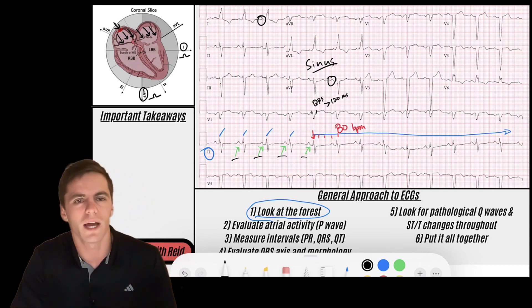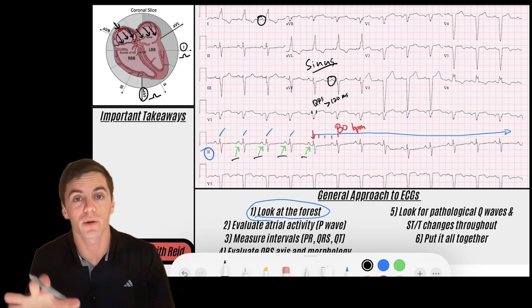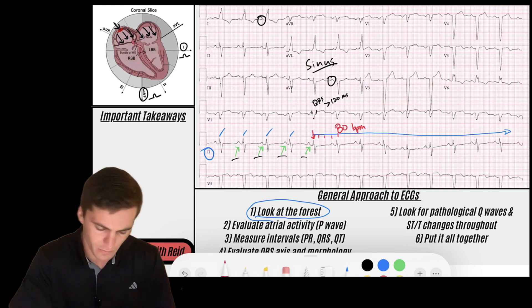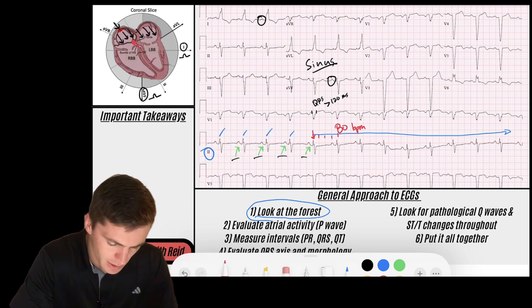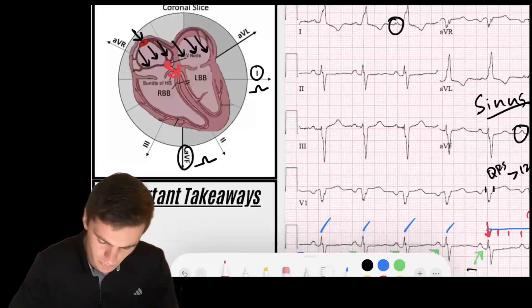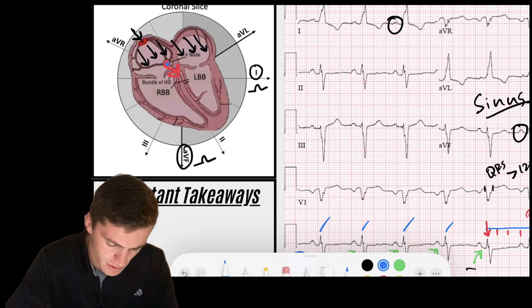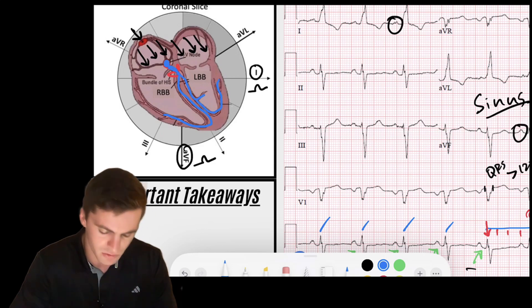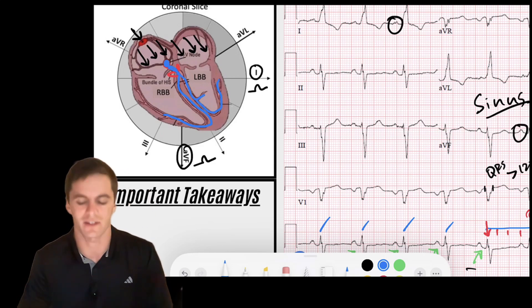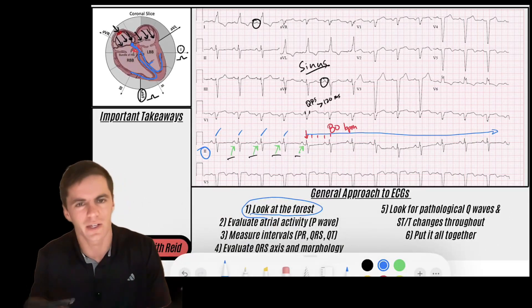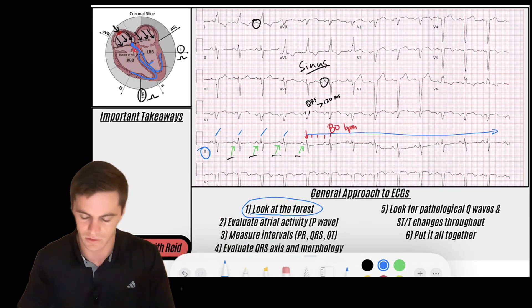But we said it's a wide complex QRS. Normally sinus rhythms are narrow, but we said it could be a bundle branch block. So let's briefly just really quick confirm that we think this is coming from the AV node down to the ventricles. Usually, when the AV node depolarizes this signal and sends it down, it sends it down quickly through these His-Purkinje fibers and the fascicle bundles and it depolarizes the ventricles really fast.